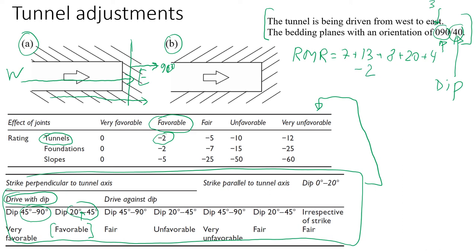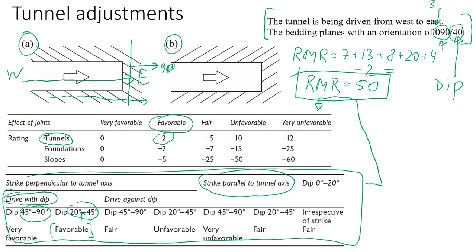For favorable conditions in tunnels, we subtract two points. So the adjusted rock mass rating becomes 50. That's how we use rock mass rating and adjust it for tunnel orientation. We also need to consider cases of driving against the dip, or when strike is parallel to the tunnel axis.